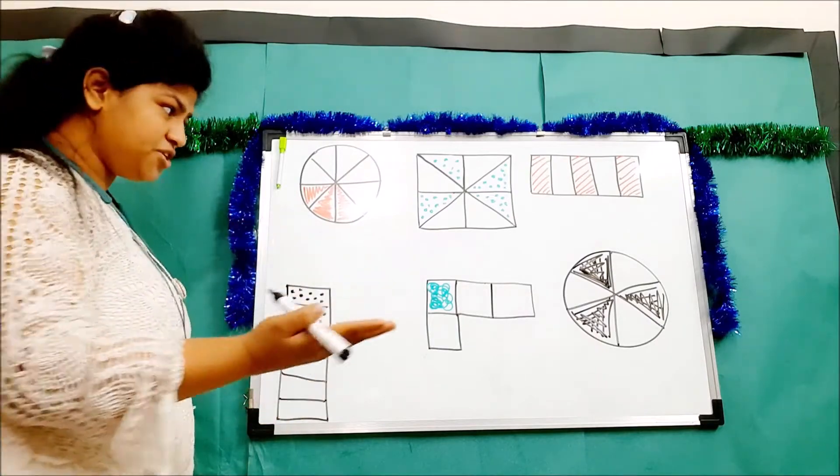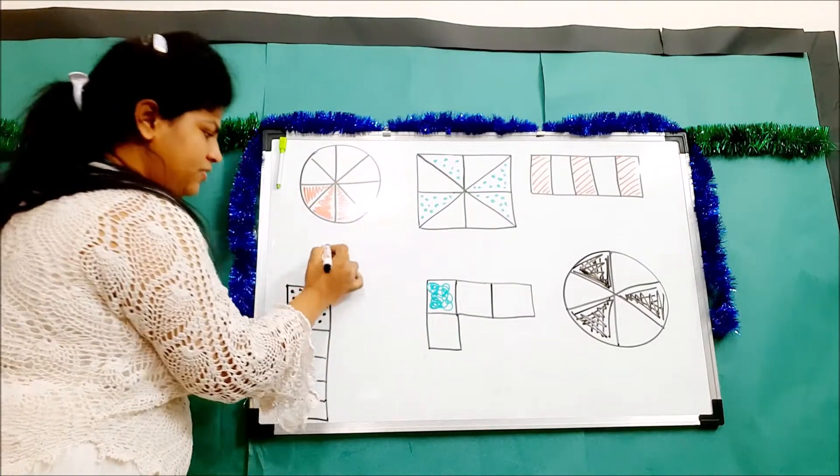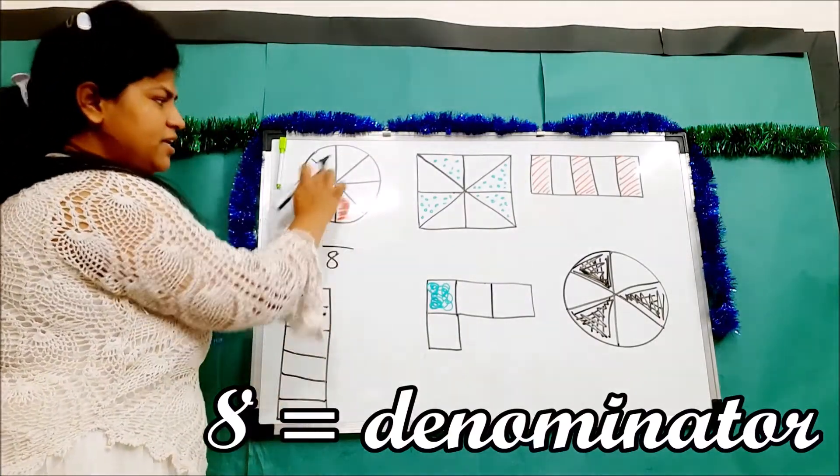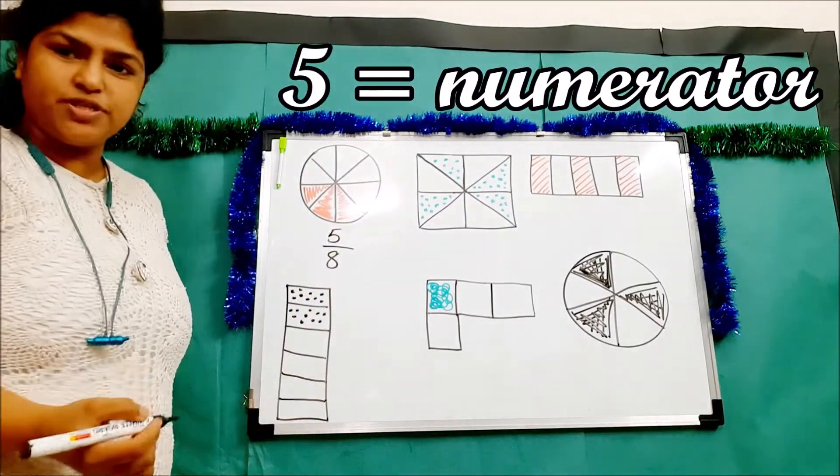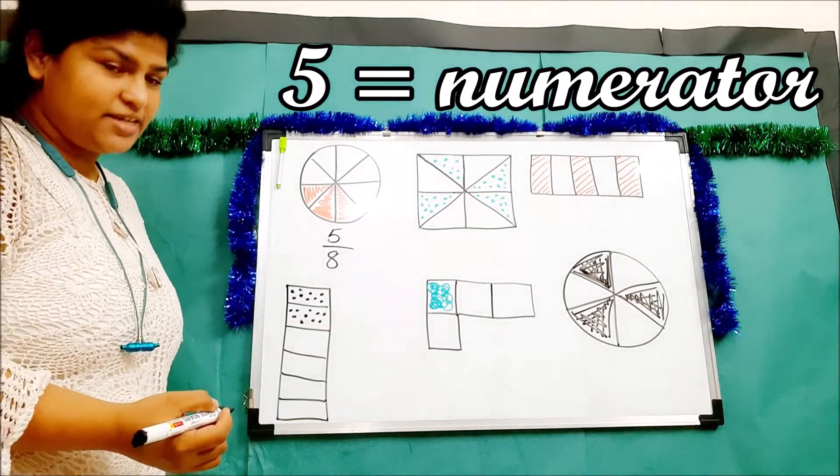Now let's see what is the fraction for the unshaded portion. Before we were focusing on the shaded portion, now we're going to focus on the unshaded portion. How many are there? There are eight. How many unshaded are there? One, two, three, four, five. So the unshaded portion is five out of eight.